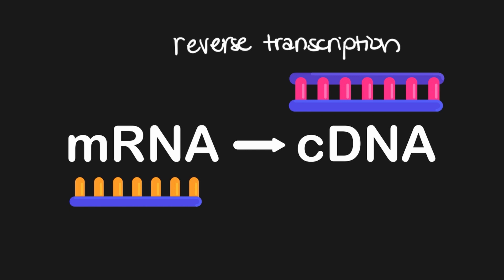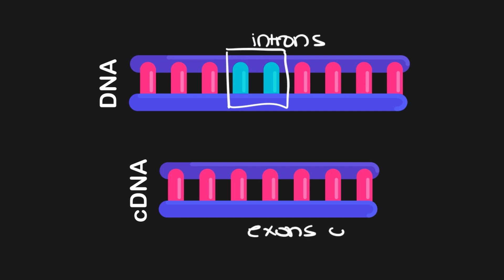This means that cDNA lacks introns and will only contain exons, unlike normal eukaryotic DNA sequences, which contain both. Since mRNA was used as a template, the introns have already been removed by post-transcriptional processing, so they can't be incorporated into the cDNA.